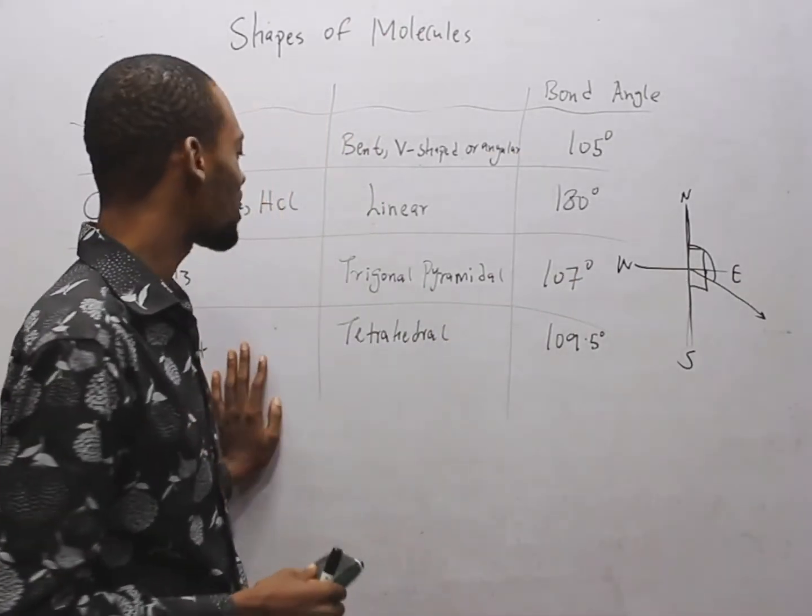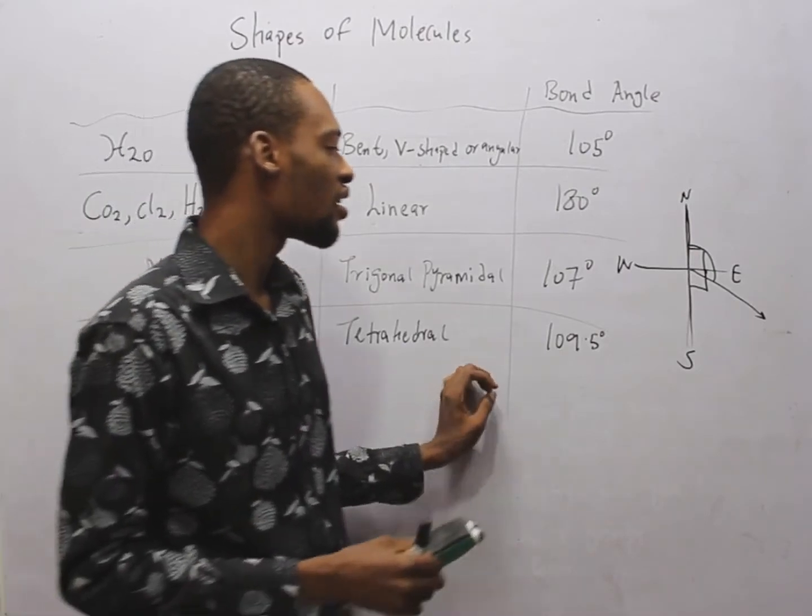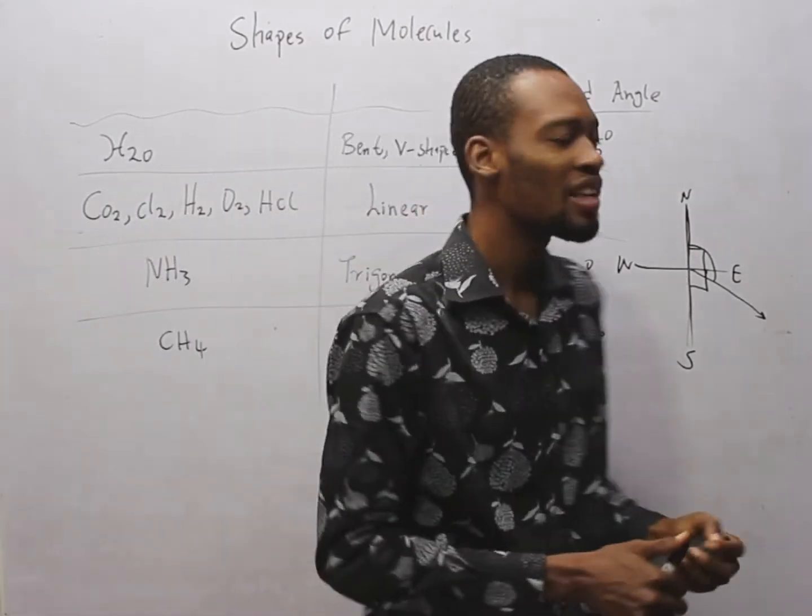Then, methane is tetrahedral. And the bond angle is 109.5 degrees.